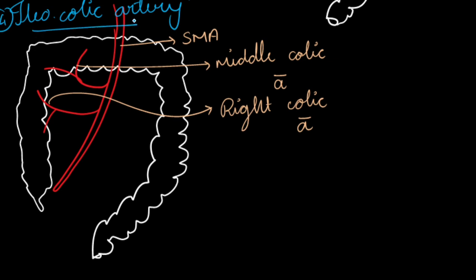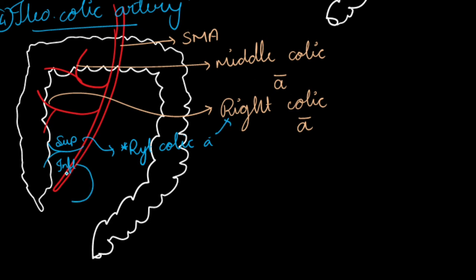Now let us discuss the ileocolic artery. This artery arises from the right side of the superior mesenteric artery and gives one superior branch and one inferior branch. The superior branch gets anastomosed with the right colic artery, and the inferior branch anastomoses with the terminal portion of the superior mesenteric artery.